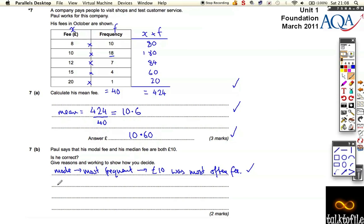However, to find a median, you need to find his middle fee when all the fees are put in order. So the middle fee when they're in order. Now he got a total of 40 fees. So to find the middle one...